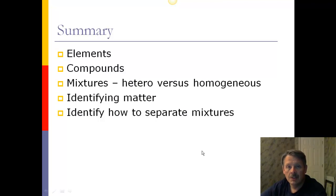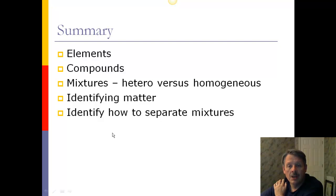In summary, you should be able to identify an element, a compound, mixtures, and separate them into hetero and homogeneous. And you should be able to identify matter, and break it up into pure and mixtures. And you should be able to identify how to separate mixtures. So, you should know about distillation. You should know about using a filter paper. You should know about chromatography. Hopefully, you took notes, and now you have to go practice. Go do your worksheet, and I'll see you in class. If you have any questions, please ask me. See you. Bye.